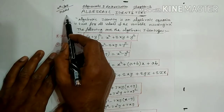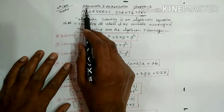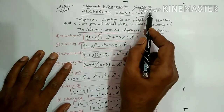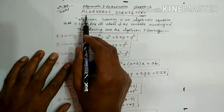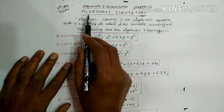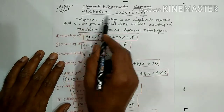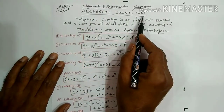9th class math — Polynomials and Factorization, Chapter 2. Here we have to study Algebraic Identities.